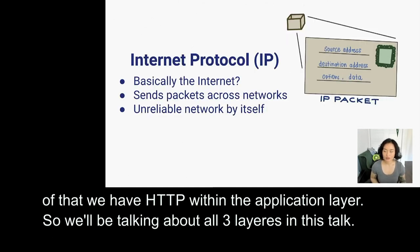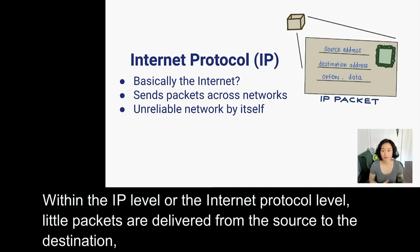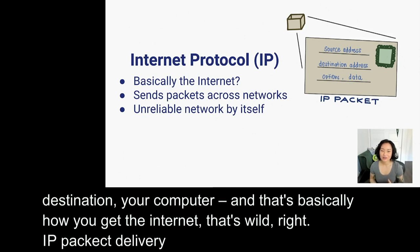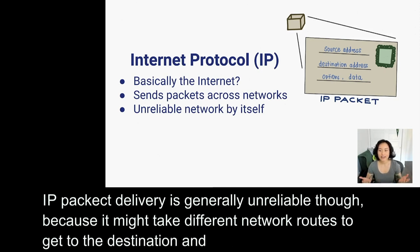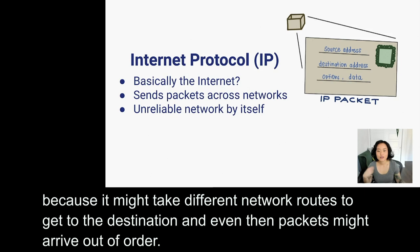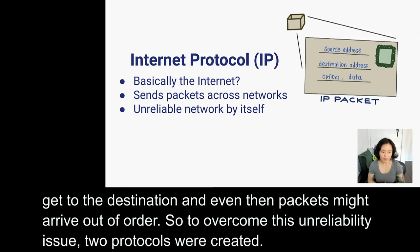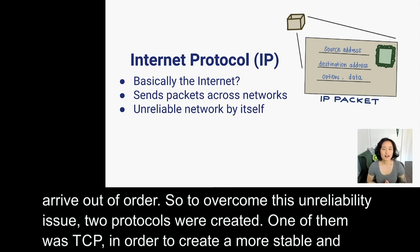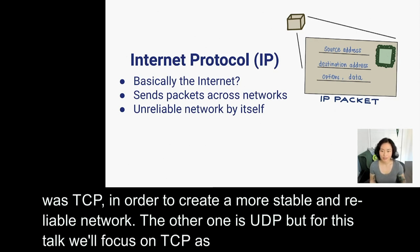Within the IP level, or the Internet Protocol level, little packets are delivered from the source to the destination — your computer. That's basically how you get the internet. IP packet delivery is generally unreliable though, because it might take different network routes to get to the destination, and packets might arrive out of order. To overcome this unreliability issue, two protocols were created, one of them being TCP. The other one is UDP, but for this talk we'll focus on TCP, because that's how our web application server communicates with the client.